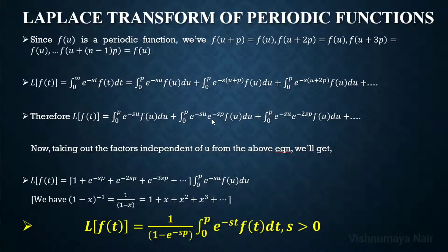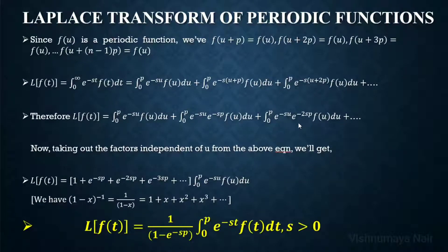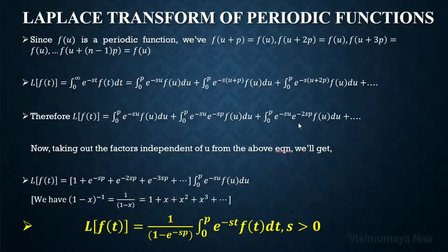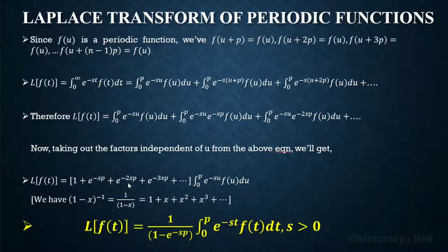In the second integral, the factor e raised to minus sp is independent of u. In the third integral, e raised to minus 2sp is independent of u, and in the nth integral, e raised to minus (n minus 1)sp is independent of u. So we can take all those factors outside, giving us: Laplace of f of t equals 1 plus e raised to minus sp plus e raised to minus 2sp plus e raised to minus 3sp plus etc., times the integral from 0 to p of e raised to minus su times f of u du.